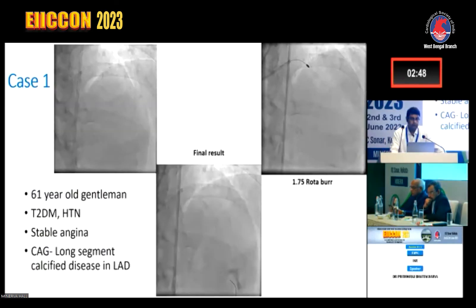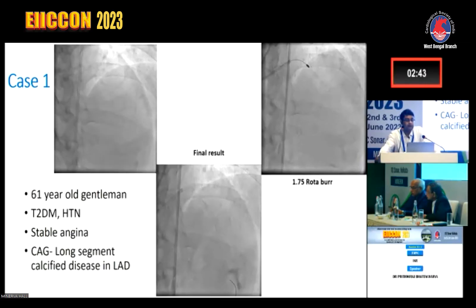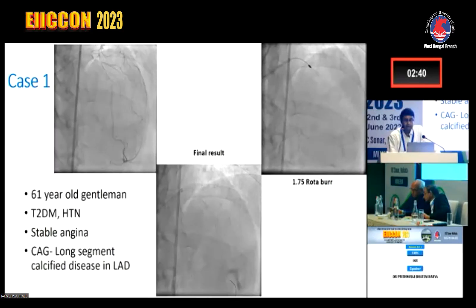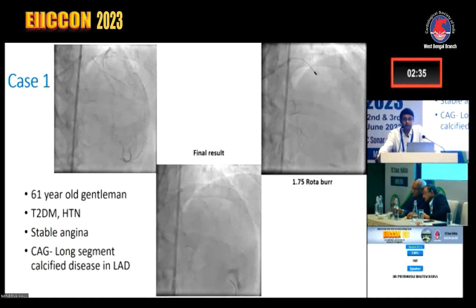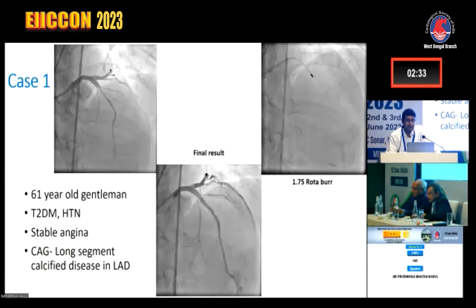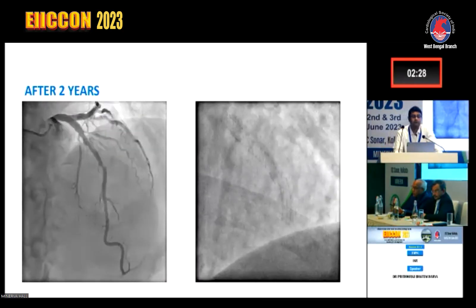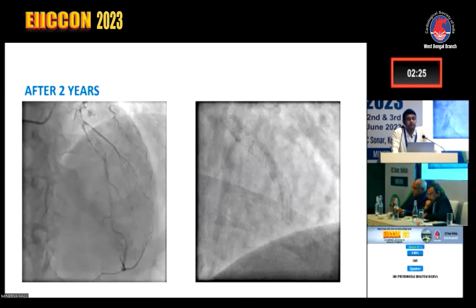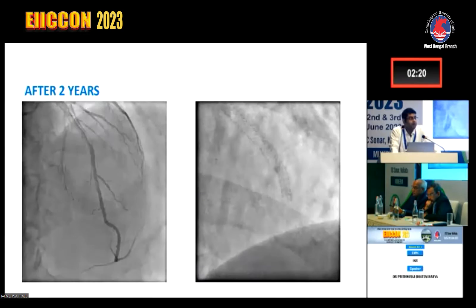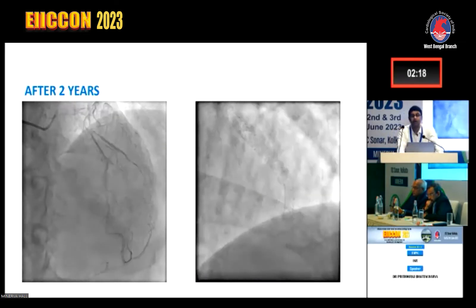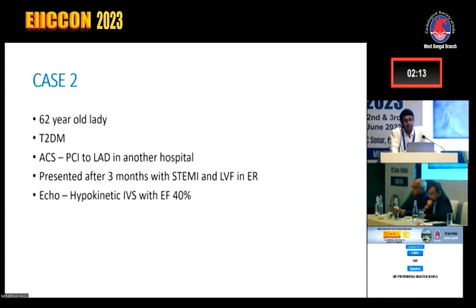Case 1: a 61-year-old gentleman, diabetic and hypertensive, with stable angina and long-segment calcified disease in the LAD. He was rotablated with a 1.75 rotablator burr and achieved a good final result. However, the patient returned after two years with symptoms, and we found focal restenosis in the distal LAD. After proper stent boost imaging, we identified a stent fracture — the mechanical cause of the in-stent restenosis. This patient ultimately went for bypass surgery.